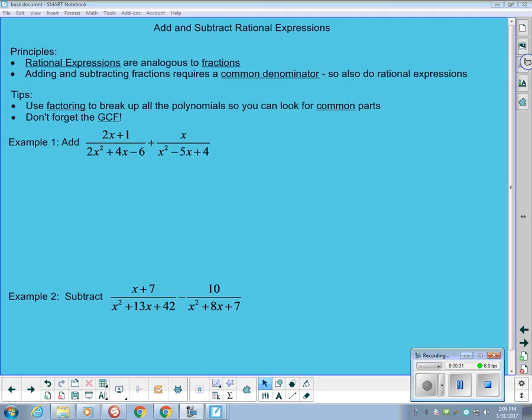Some tips along the way: we want to try to break any polynomials that we see up into as small parts as we can by factoring, and make sure that we look out for greatest common factors. In our first example here, where we're adding these two rational expressions, I see my denominators are both quadratic, so I'm going to try to factor those and break them into smaller pieces so I can see what the parts of my denominator actually need to be.